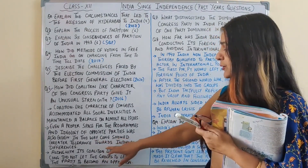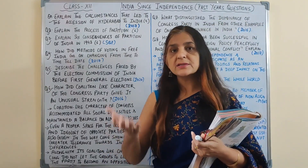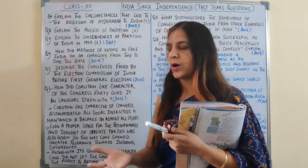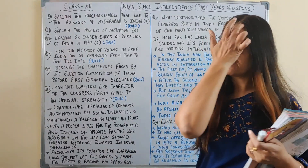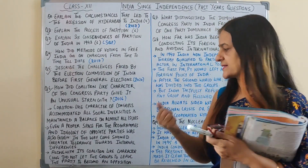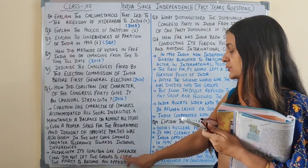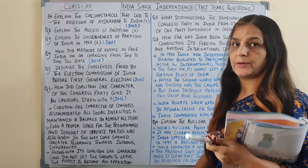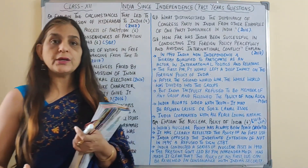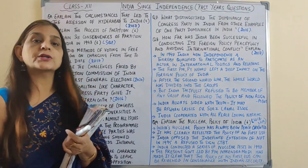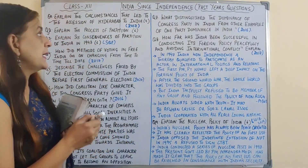The coalition-like character of Congress accommodated all social diversities and maintained a balance on almost all issues. Even space for the programs and ideology of opposition groups was given within Congress, so opposition groups did not leave the party to form separate opposition parties. In this way Congress showed greater tolerance towards internal differences, making it a very strong force.